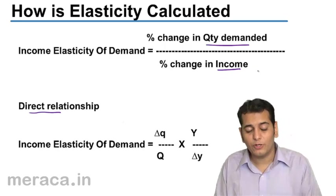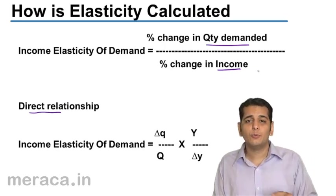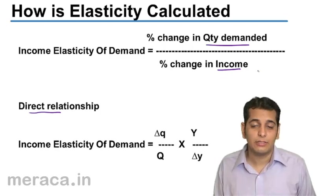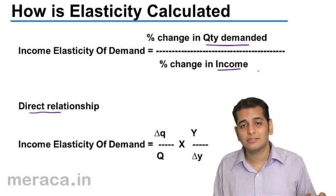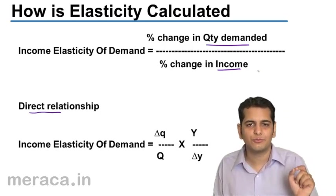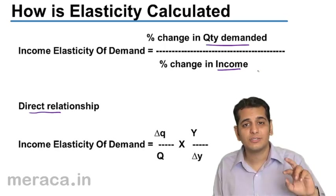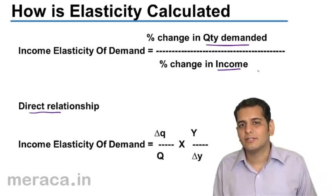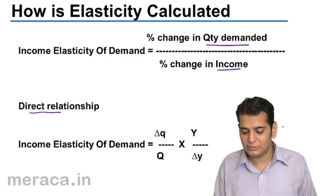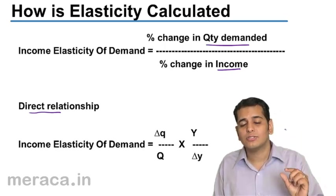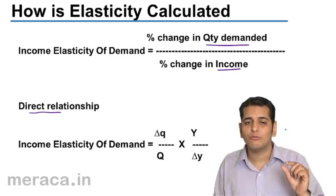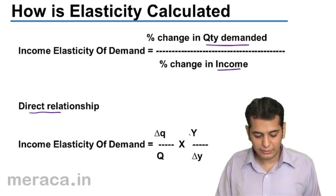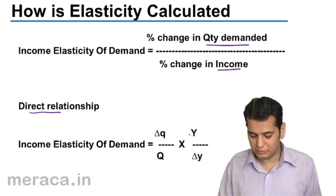Because the relation is direct, you will never get a negative answer. In price elasticity, we always got a negative answer because of the indirect relation. But in income elasticity, the answer is always positive.